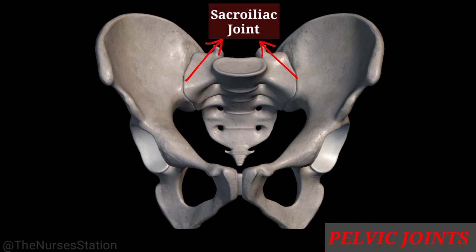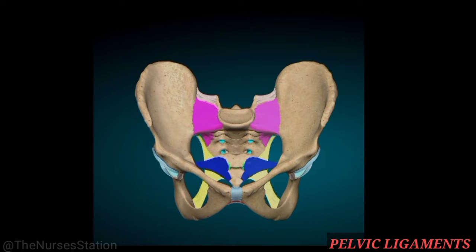The sacroiliac joint is the strongest joint in the human body — a synovial joint between the ala of the sacrum and the auricular surface of the ilium. It allows very little mobility through slight gliding and rotation movements. In women, the ligaments of the joint soften during pregnancy, enabling an increase in pelvic diameter during childbirth.